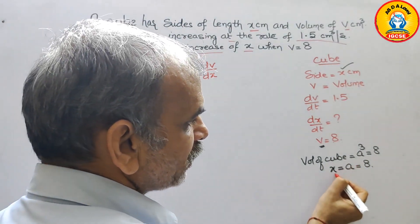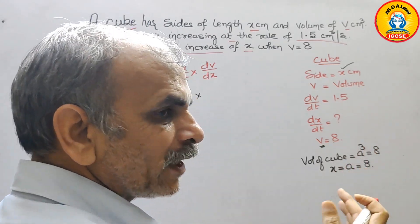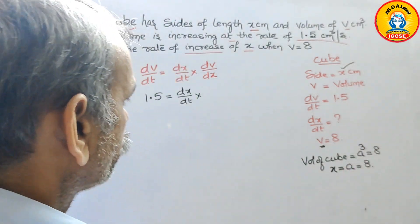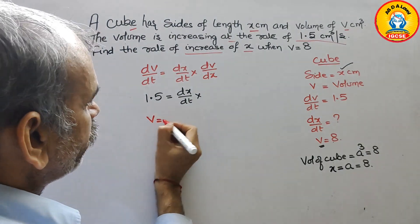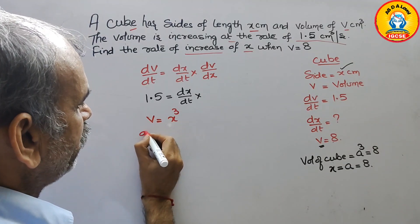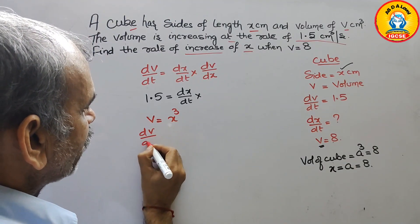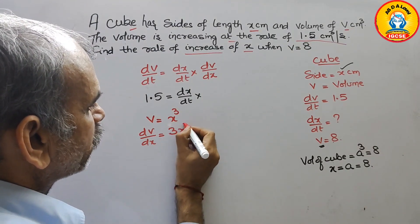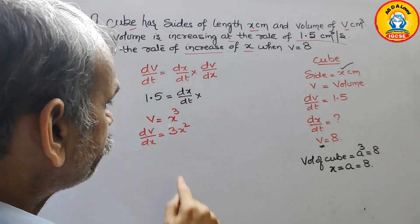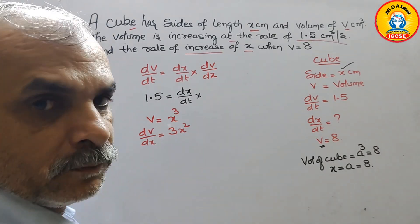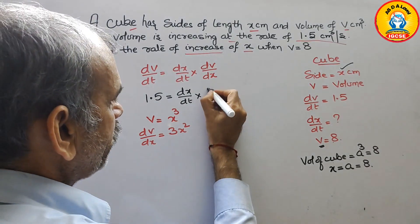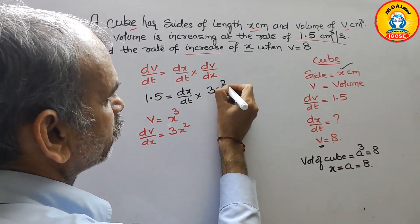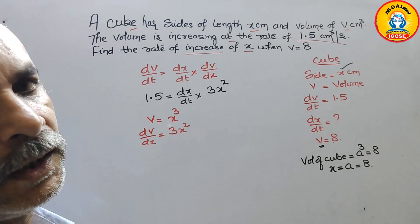So here the volume is a cube or you can say x cube. So we can say v is equal to x cube. Now differentiate: dv by dx is equal to 3x square. This value we have to substitute here. So this will be 3x square.